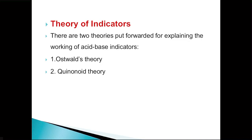Today we'll be discussing the theory of indicators. We already seen that the indicators used in acid-base titrations are called pH indicators. These pH indicators are either weak acids or bases and they show a difference in color in accordance with the presence of an acid or a base, or we can say a change in pH. There are two theories put forward for explaining the working of acid-base indicators.